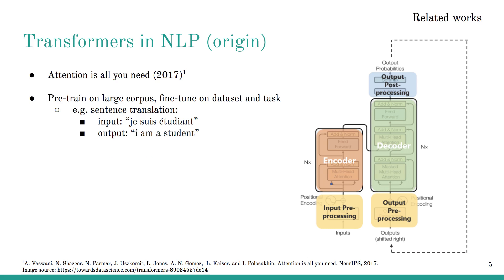Transformers were originally introduced in the field of natural language processing in 2017. The popular approach is to first pre-train the transformer model on a large text corpus, and then fine-tune the model on a specific dataset and task, for example, sentence translation.